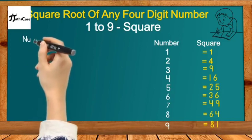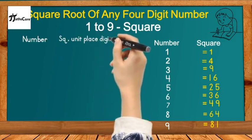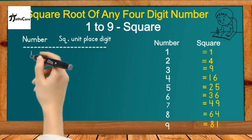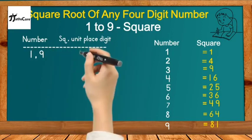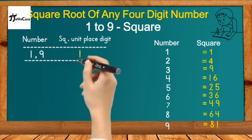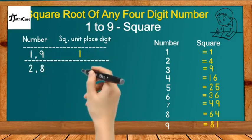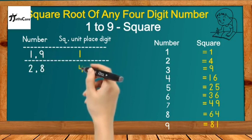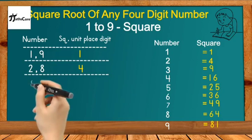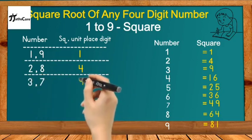The table has two columns: the first for the number, and the second for the unit place digit when we square that number. Starting from 1: observe that 1 and 9 both have the same unit place digit after squaring — 1² = 1 and 9² = 81, so write 1 and 9 together with unit digit 1. Next, 2 and 8: 2² = 4 and 8² = 64, both have unit digit 4. Then 3 and 7: 3² = 9 and 7² = 49, both have unit digit 9.